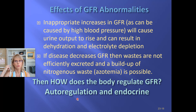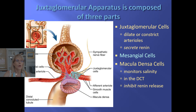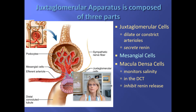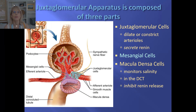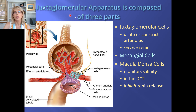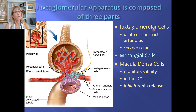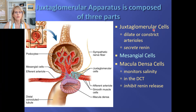So how does the body regulate the GFR and keep it in that sweet spot? The answers are autoregulation — which I've already alluded to by talking about the juxtaglomerular cells — and hormones. The juxtaglomerular apparatus has three parts. The juxtaglomerular cells are smooth muscle cells, but they're also mechanoreceptors that sense blood pressure, and they're also endocrine cells that release a hormone.